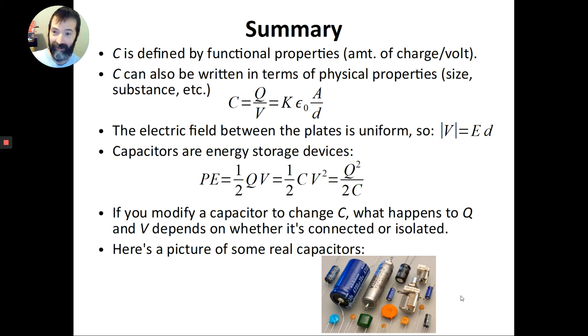So C, when you're studying circuits, C refers to capacitance. And the definition of capacitance is based on how the capacitor works. The amount of charge per volt. So that's this C equals Q over V. You can also write capacitance in terms of the physical properties of the object. So like, how big is it? What's in between the plates? And that's the second formula. So both of those are ways of finding C. The electric field between the plates is going to be uniform. So we can apply this idea about uniform fields that we saw back in electrostatics. The potential difference of the volts has to be the electric field E times the distance d.